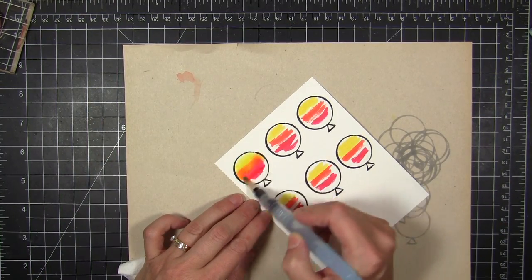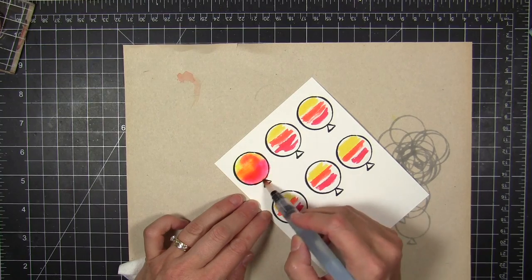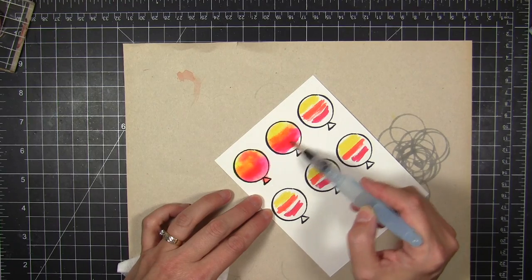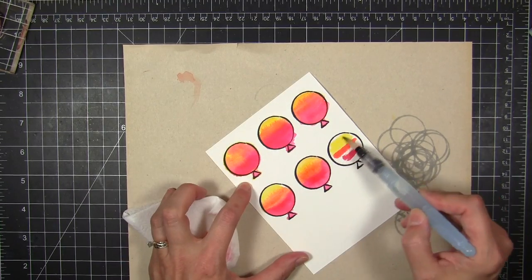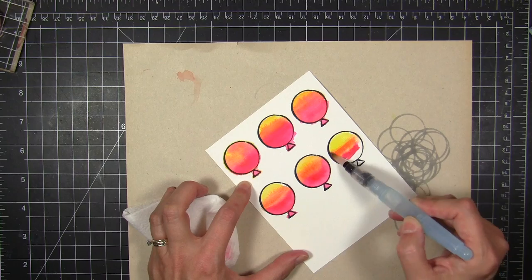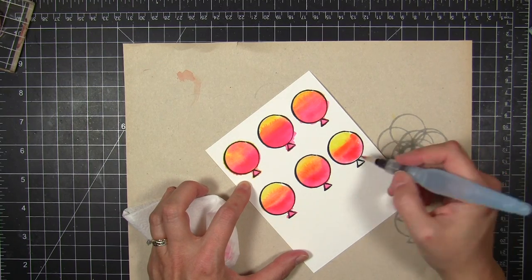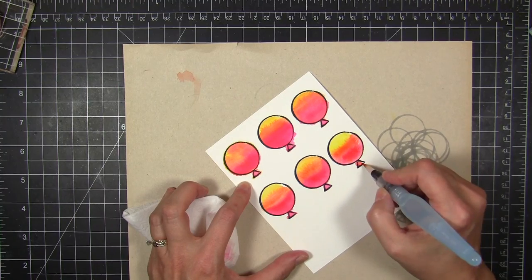I've got three different colors that are going to blend well together. And then I'm using my Pentel Aquash to blend them all together. And it's really important to clean the brush off against some clean paper towel before you go on to the next balloon so that you don't muddy that initial yellow color at the very top as you start to watercolor and blend all the colors down.